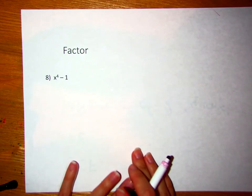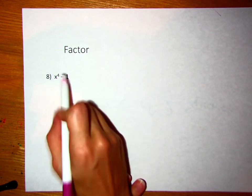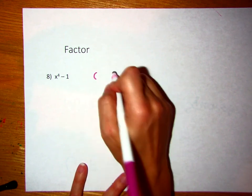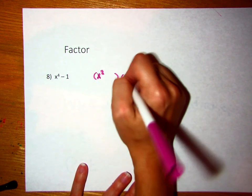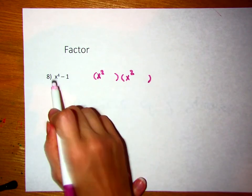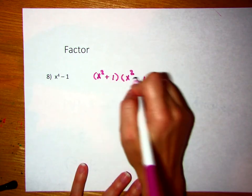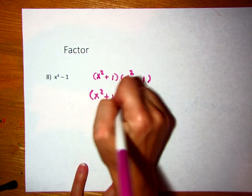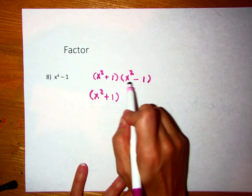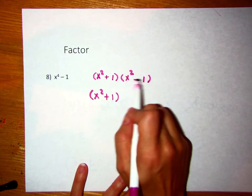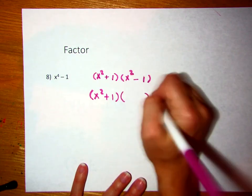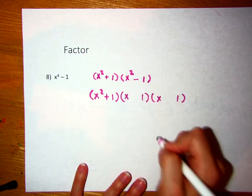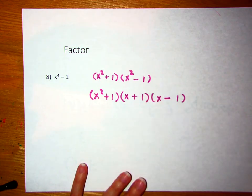This one is like the tricky question because we look and say, can we take the square root or is there something times itself that can give me both terms? Yes. There's a subtraction sign. x squared times itself gives me x to the fourth. 1 times 1 gives me 1. One is plus, one is minus. This is as far as we can go. There's no GCF. So we bring that one down, x squared plus 1. The catch is this is still a difference of two squares, so we've got to factor this one even farther. What times itself gives me x squared? x times x. What times itself gives me 1? 1 and 1. One's positive, one's negative. Now we are done.